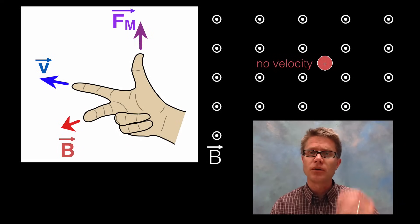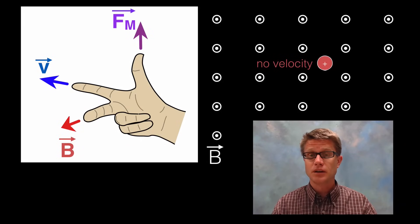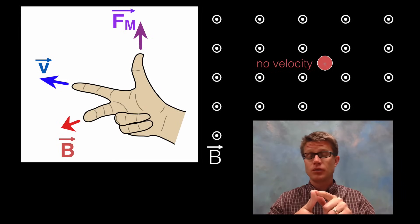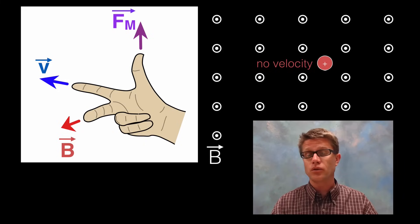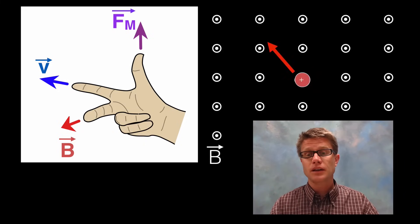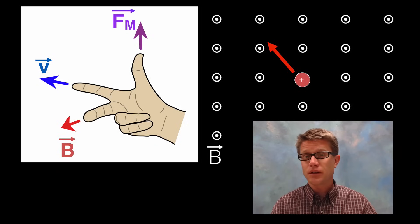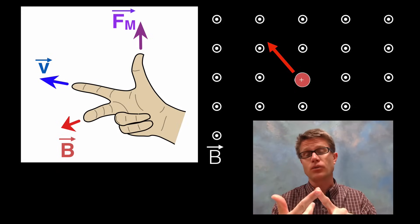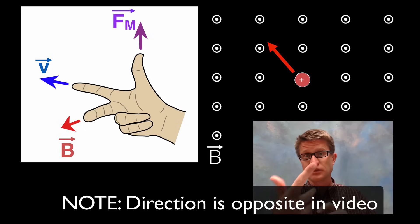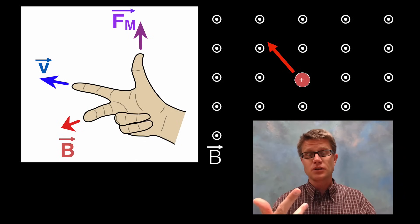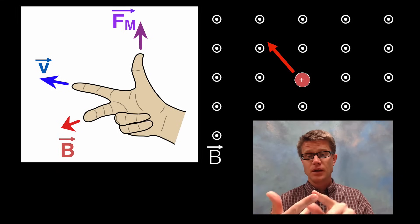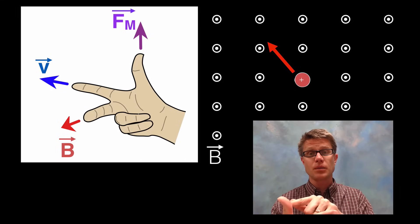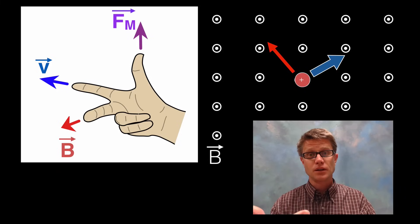If we have a charged particle with no velocity in a magnetic field, the force is going to be zero — again, if it's not moving there's no force. For a harder problem: we have a magnetic field and a positive particle moving up and to the left. Make your hand flat, point your index finger up and to the left in the direction of the moving charge, then point your middle finger toward you because the field is coming toward us. Your thumb then shows the magnetic force, which is going to go up and to the right.